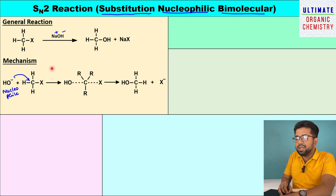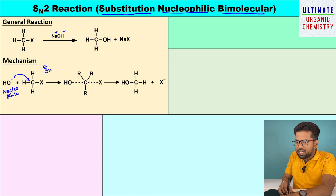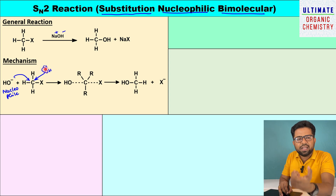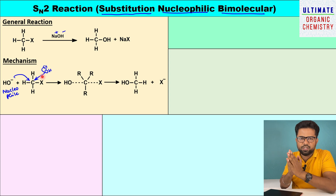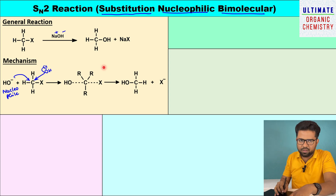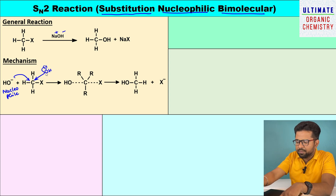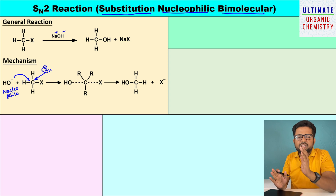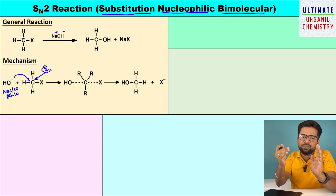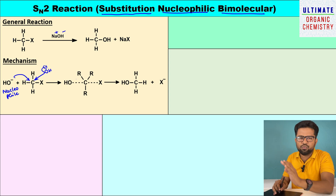You may ask: why can't OH⁻ approach from the same side as the leaving group? If OH⁻ tries to approach from the front side, this OH⁻ carries a negative charge — it contains electrons — and the leaving group X is also leaving as X⁻, so it also carries electrons. Whenever these two negatively charged species come closer to each other, electron-electron repulsion appears. To avoid this repulsion, the nucleophile always approaches opposite to the leaving group.